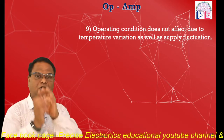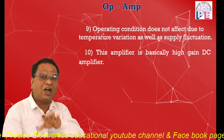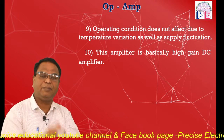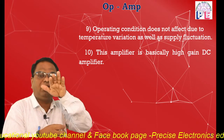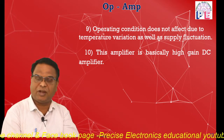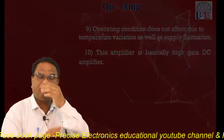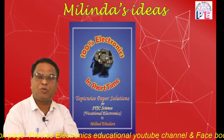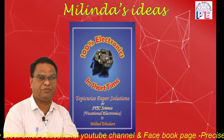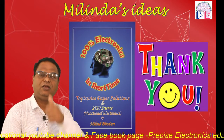Last but not least, this amplifier is basically a high gain DC amplifier. It has a very high gain and can faithfully amplify DC signals, which is why it is known as a high gain DC amplifier. That is the introduction of the operational amplifier. In the next video lecture, we are going to study the block diagram, pin configuration, and pin diagram of the operational amplifier. Keep watching — bye, take care, see you!